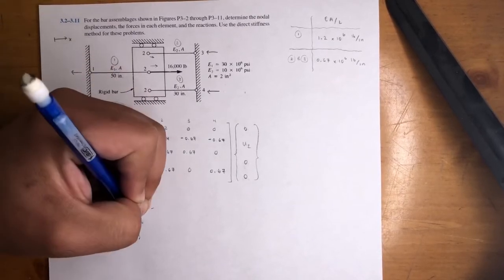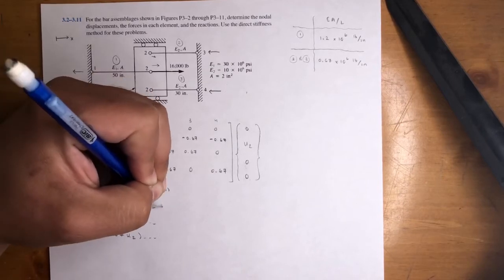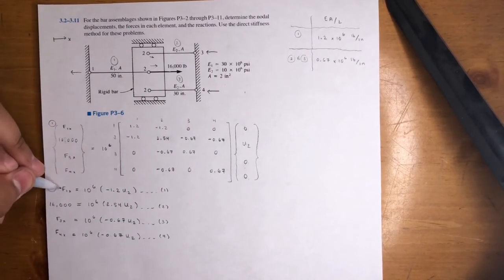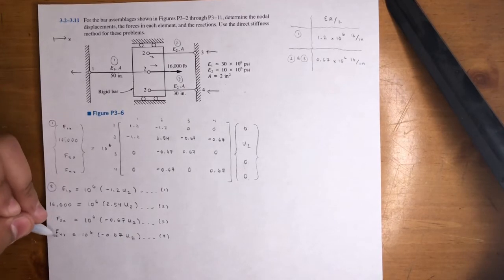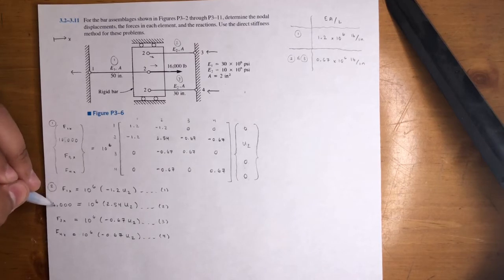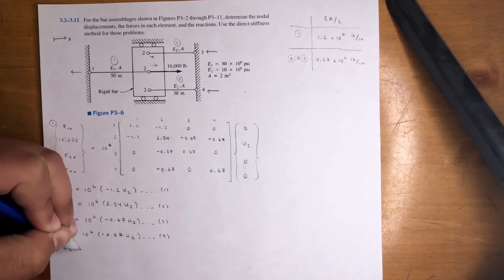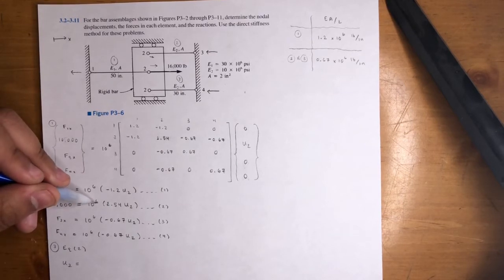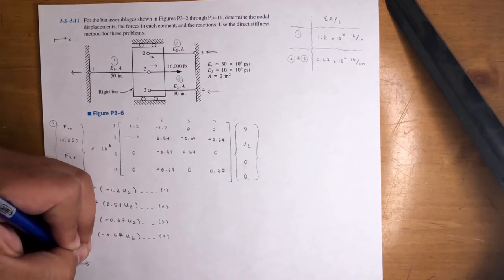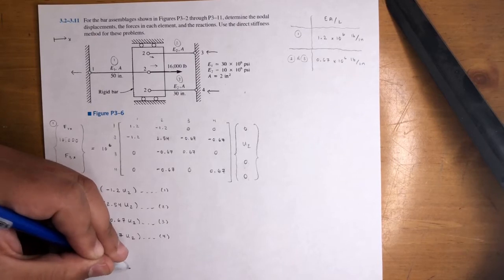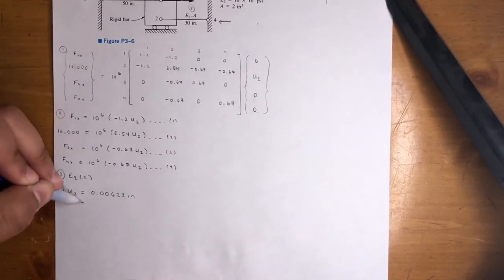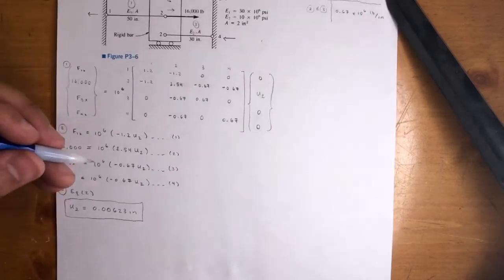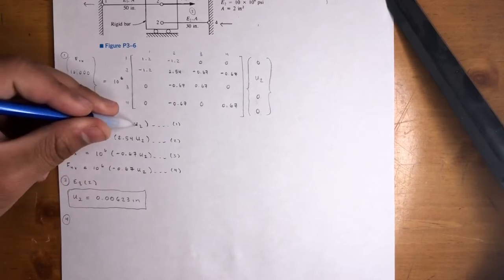So we're on the right track. This is equation 1, equation 2, equation 3, equation 4. The trick is to stay away from equations where you don't know the force — so avoid equations 1, 3, and 4. Luckily we can find U2 just with equation 2. Using equation 2: U2 equals 16,000 divided by 10^6 divided by 2.54. U2 equals 0.00623 inches. It's positive — moving to the right when you apply this force. You can now find every other force by plugging in U2.